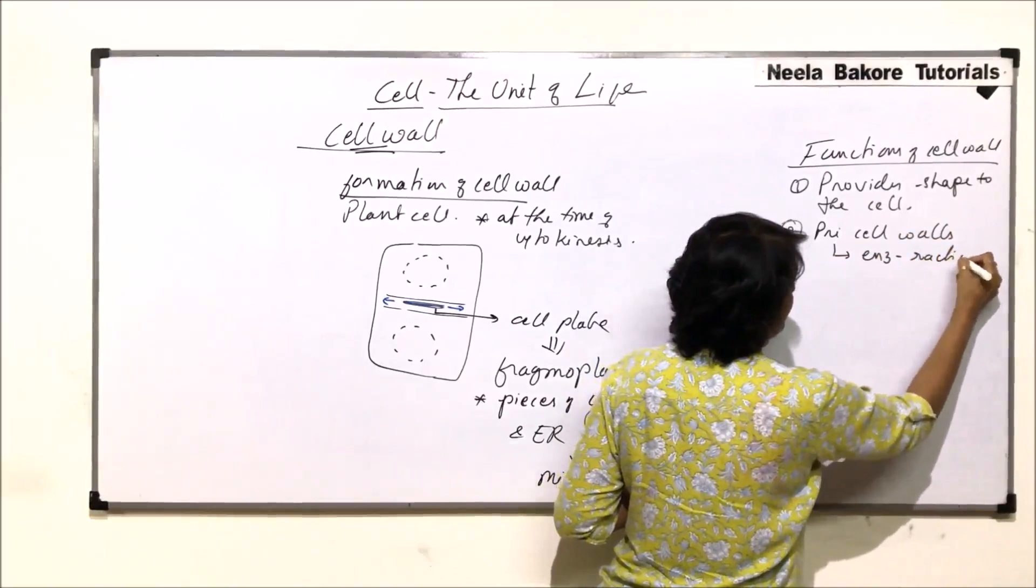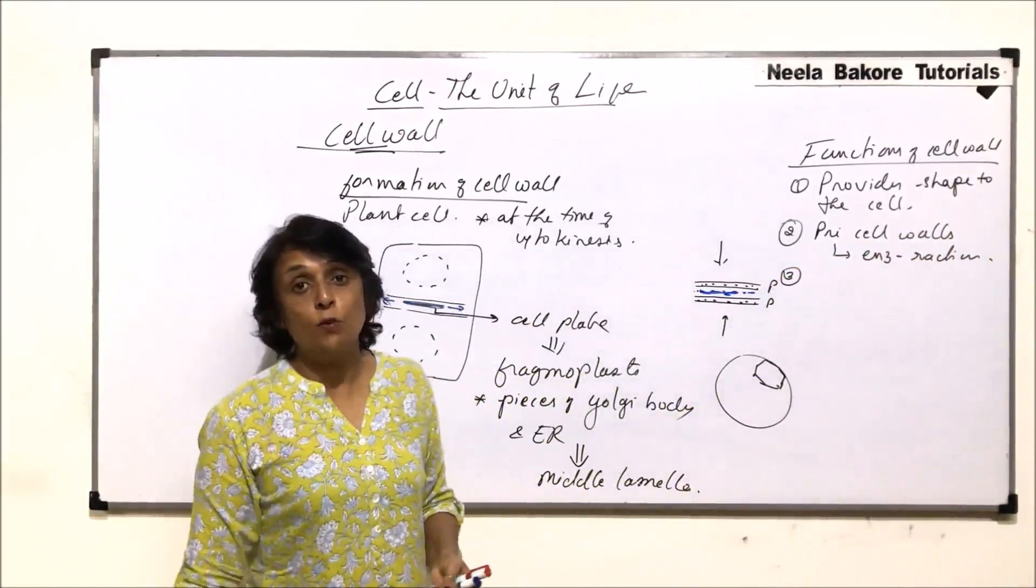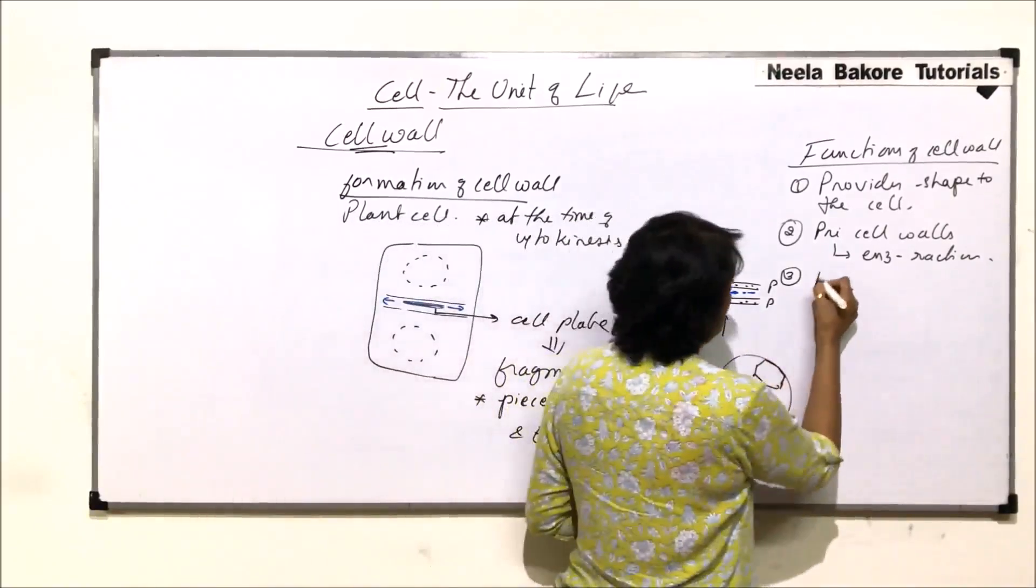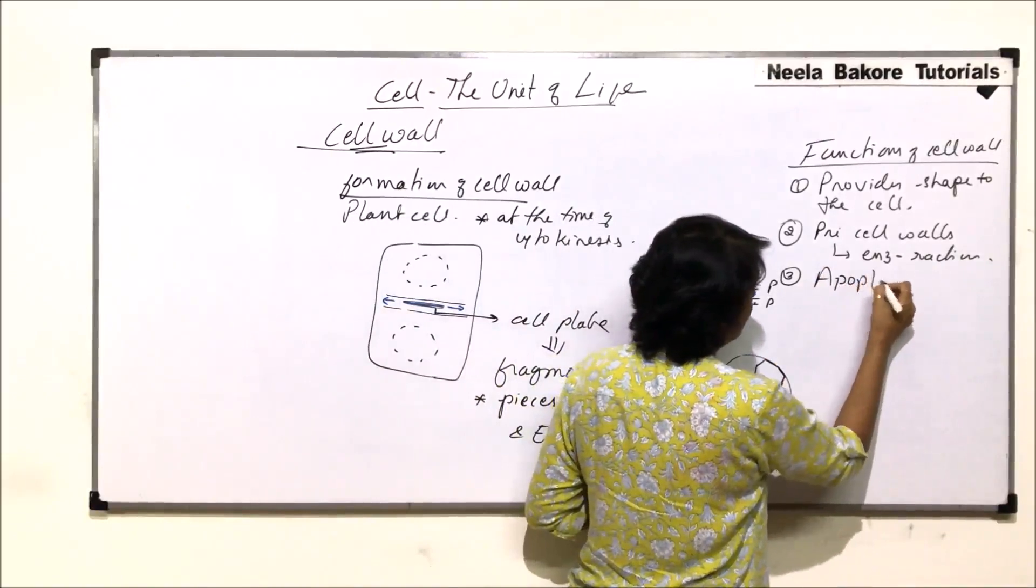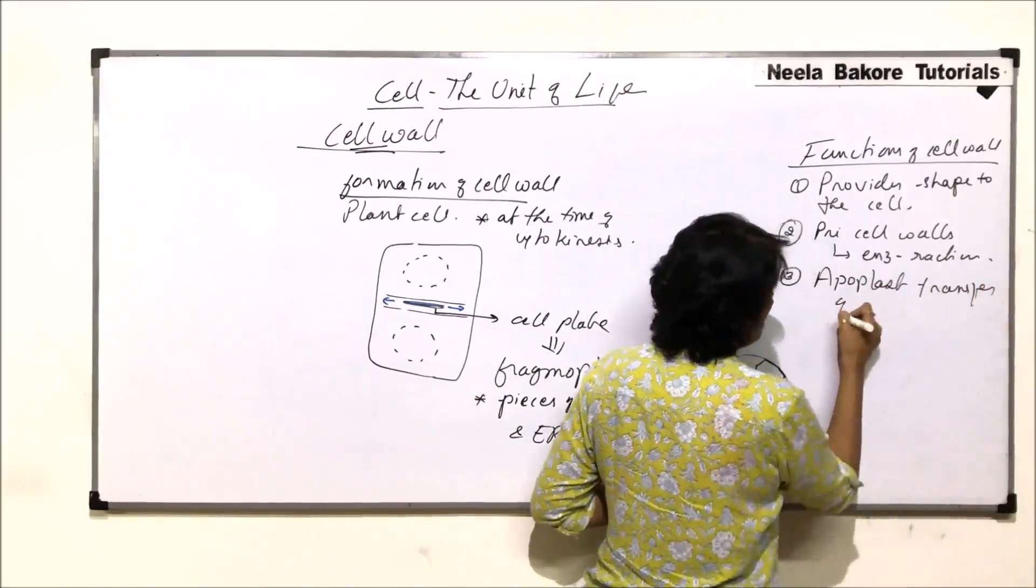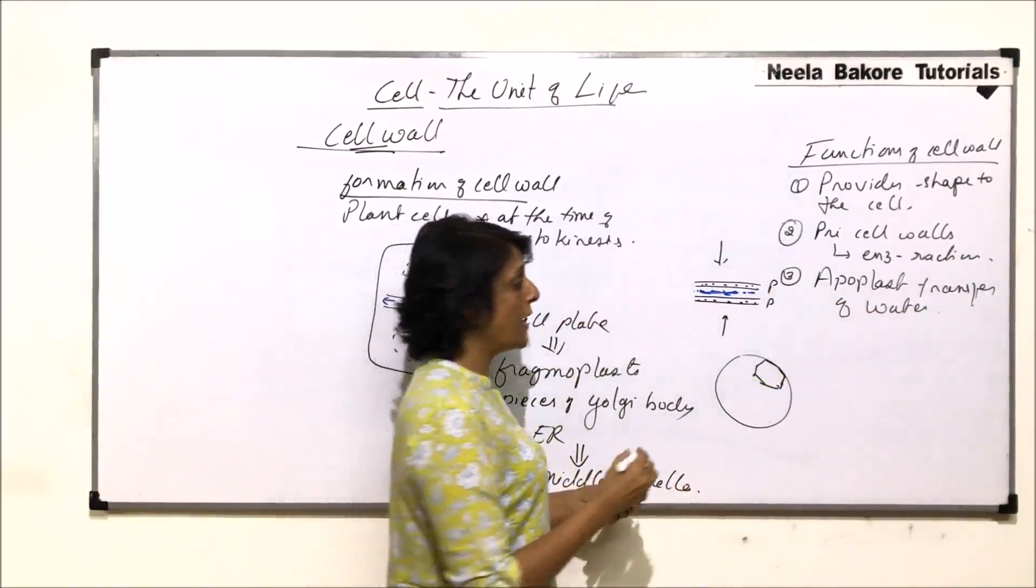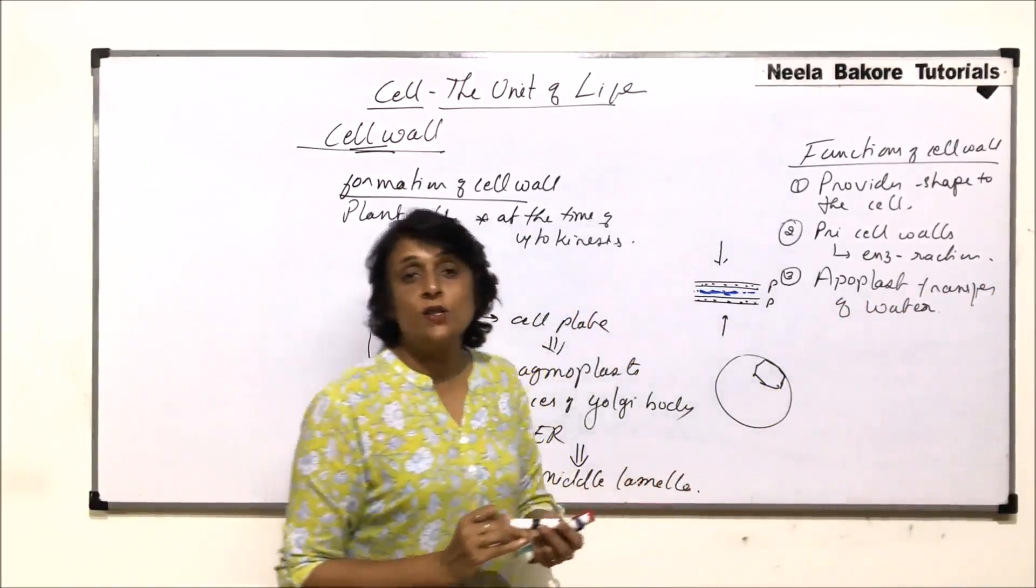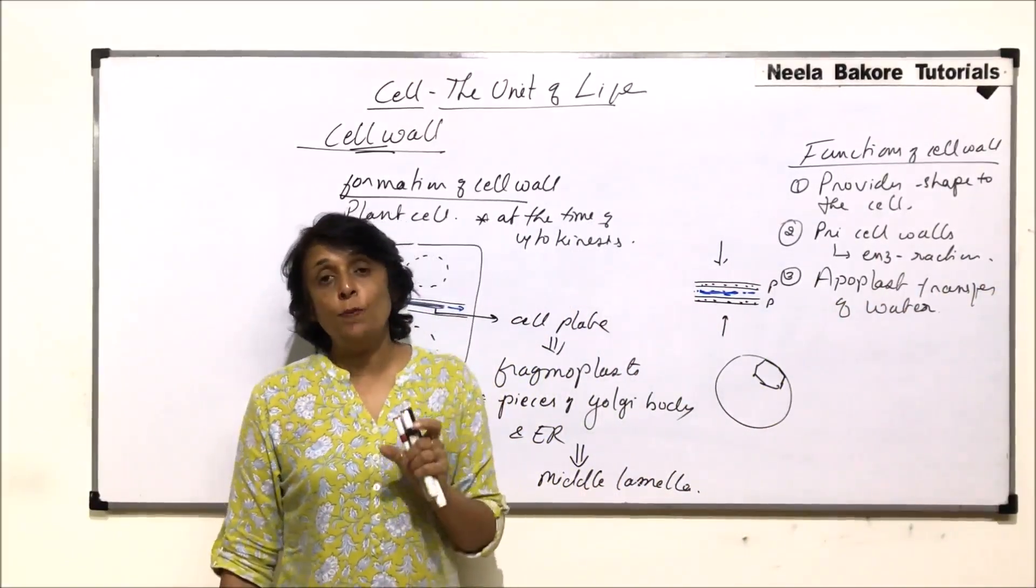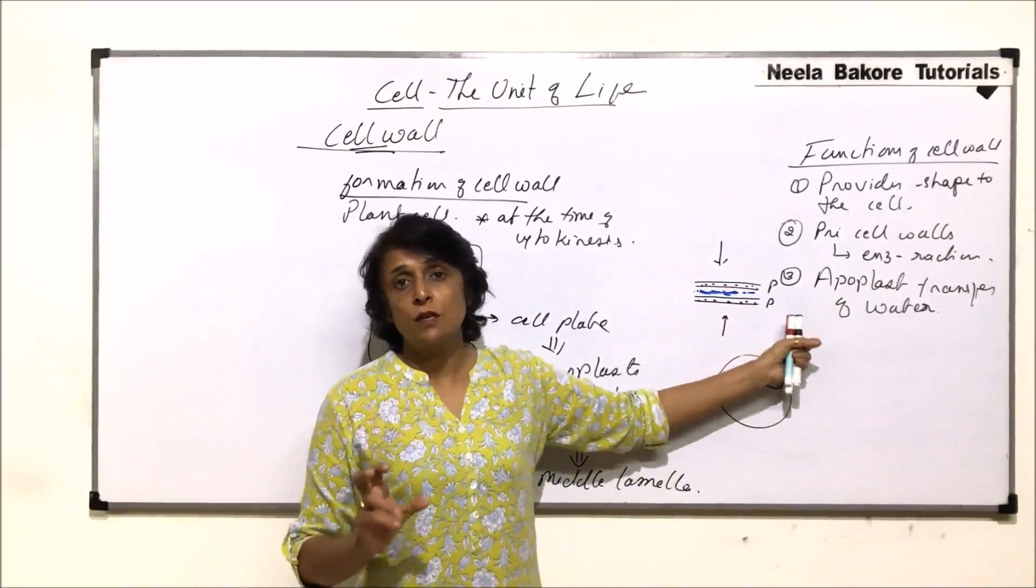Another important function which is performed by the cell wall is transport of water through apoplast. So it is apoplast transfer of water. During water absorption there are two ways in which this water gets absorbed: one is called symplast and the other is apoplast. The apoplast movement is exclusively due to this cell wall.